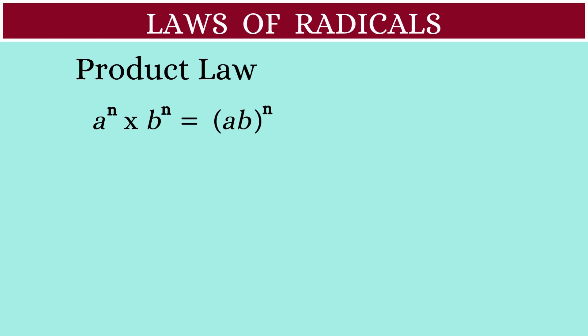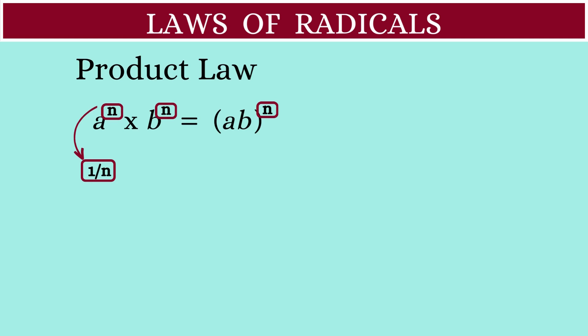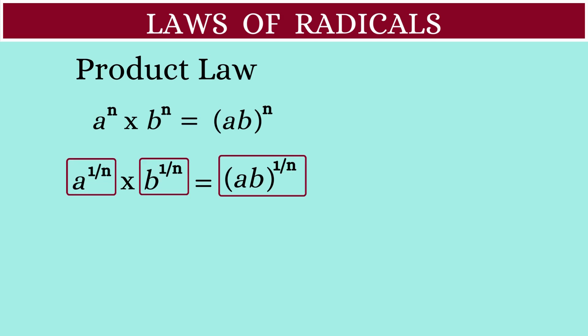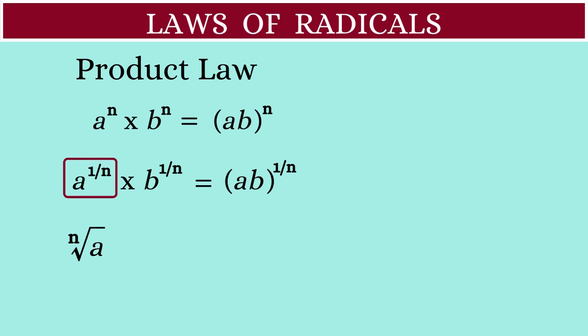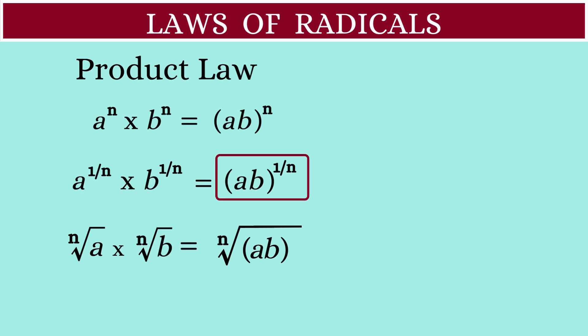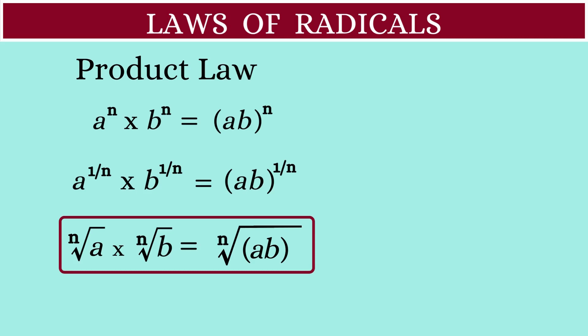Now, if we have a to the power of 1 by n multiplied by b to the power of 1 by n, that equals a·b whole raised to 1 by n. These are nothing but radicals. So this statement can also be written as: the nth root of a times the nth root of b is equal to the nth root of a·b. This is our first law of radicals.